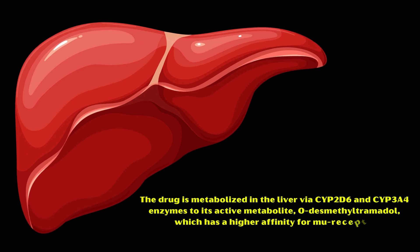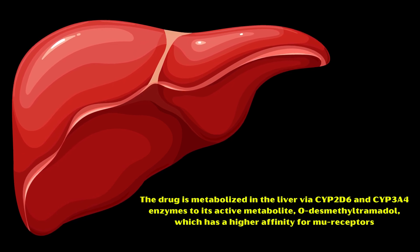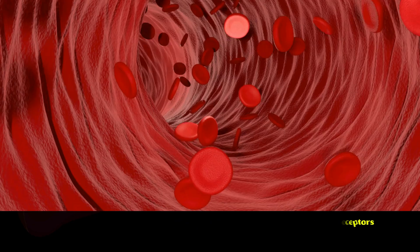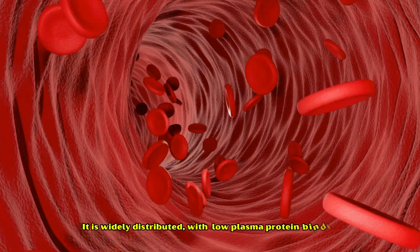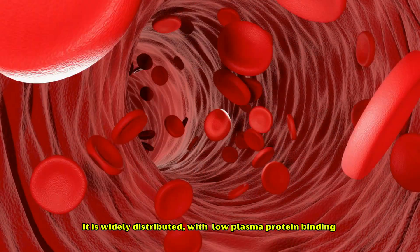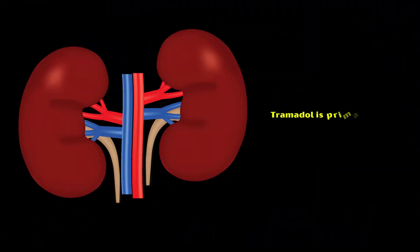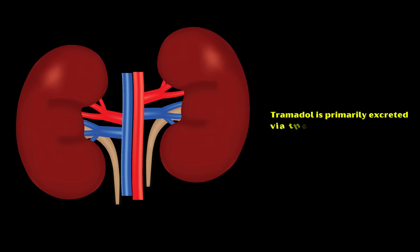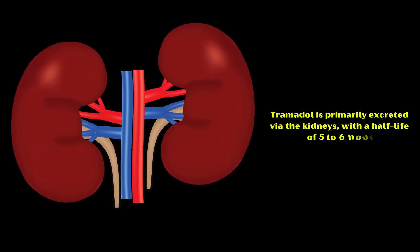O-desmethyltramadol has a higher affinity for mu receptors. Tramadol is widely distributed with low plasma protein binding, and is primarily excreted via the kidneys, with a half-life of 5–6 hours.